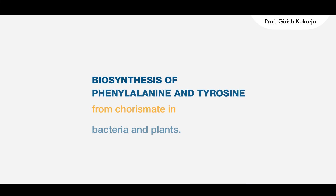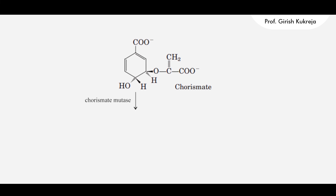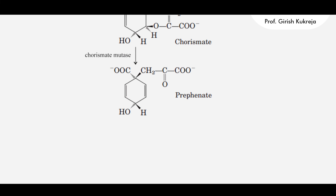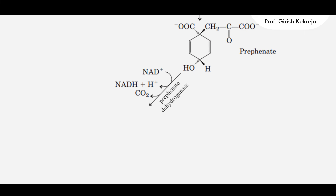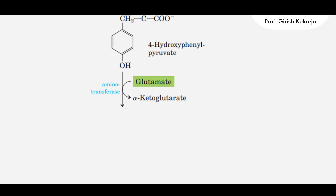The biosynthesis of phenylalanine and tyrosine from chorismate in bacteria and plants is much simpler than the synthesis of tryptophan. In the first step, chorismate is acted upon by chorismate mutase to form prephenate, which is a common intermediate for formation of both tyrosine and phenylalanine. In the tyrosine branch, prephenate is acted upon by prephenate dehydrogenase, which catalyzes oxidative decarboxylation — NAD+ is converted to NADH and H+, and with removal of CO2, 4-hydroxyphenylpyruvate is formed. This then undergoes a reaction catalyzed by aminotransferase, which transfers the amino group from glutamate to 4-hydroxyphenylpyruvate, forming tyrosine.